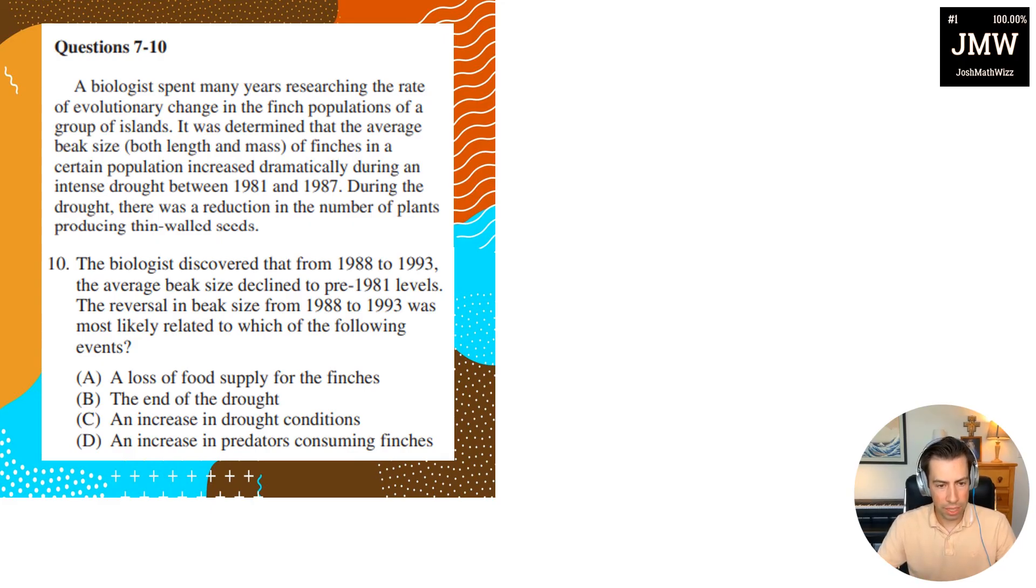The biologist discovered that from 1988 to 1993 the average beak size declined to pre-1981 levels. The reversal in beak size from 1988 to 1993 was most likely related to the following events. So again, if the drought is what caused the beak size to increase, then if I get rid of the drought, let me write it as a flow chart. So if I have beak size here, well, let's just go through it and just go through these answer choices real quick.